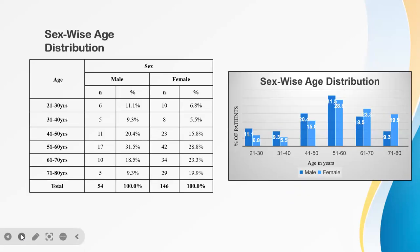In the sex-wise age distribution, between 51 to 60 years, the male percentage was around 31% and the female percentage was 28.8%.